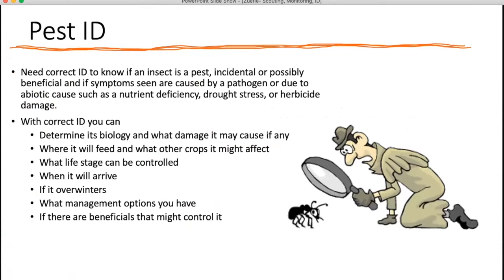I want to go into identification now. I hope you understand how important scouting is so that you can catch issues before they become a problem. But you also have to be able to identify what the issue is so that you can manage it correctly. Not everything you're going to encounter out there is a pest — you might see an insect that's beneficial, like a ladybug or a minute pirate bug, and you definitely wouldn't want to control for those. You could also find insects that are just incidental — they landed in your garden but aren't causing any damage.